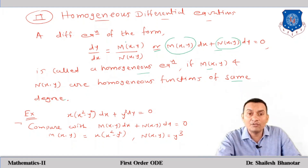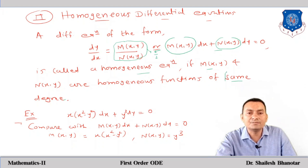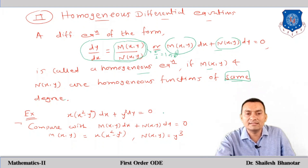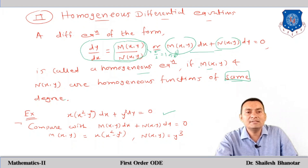When M and N have the same degree, M/N results in degree 0 (i.e., x⁰ or a function with no net degree in x and y). This confirms the equation is homogeneous. Consider example 1: [x(x²−y²)]dx + [y³]dy = 0... wait, let us first understand the concept and then analyze this specific form with M(x,y) = x(x²−y²) and N(x,y) = y³.